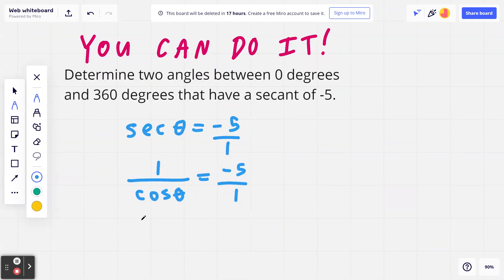Step number 3. If you take the reciprocal of both sides, cosine theta equals 1 divided by negative 5. To be clear, you can put the negative at the top, so negative 1 divided by 5.